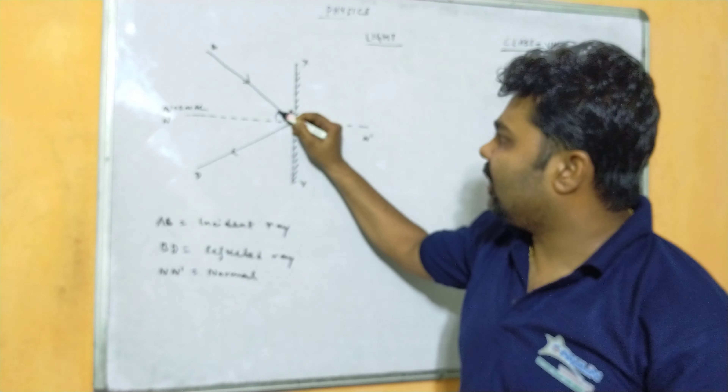Whenever an incident ray falls on a plane mirror, it gets reflected in the same medium. When we draw the normal, the angle subtended between the incident ray and the normal is said to be the angle of incidence. The angle of incidence is denoted by I, and the angle of reflection is denoted by R.